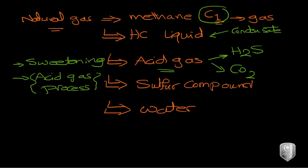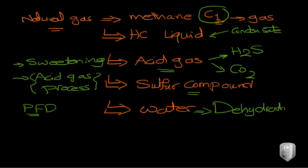You will be given the process flow diagram done by Aspen HYSYS and you just open it through Coud Chair. For sulfur components, these will be removed, and for water vapor to be removed we use a process called dehydration — which is also the second topic in the exam. So from this, you need to understand both sweetening (acid gas processing) and dehydration. In this video we are going to focus more on the sweetening process.